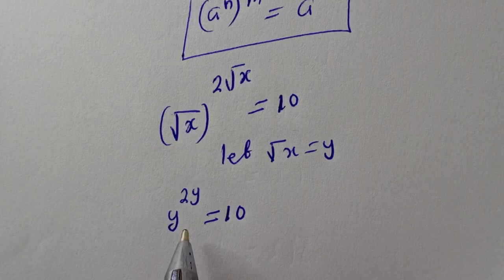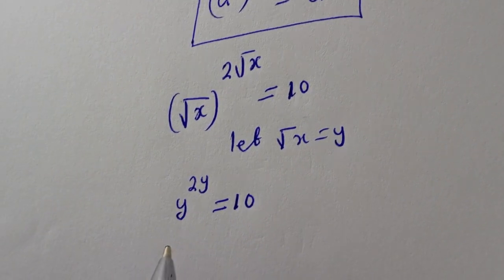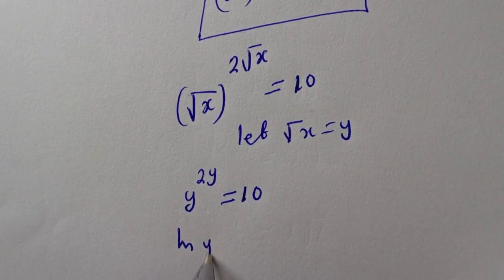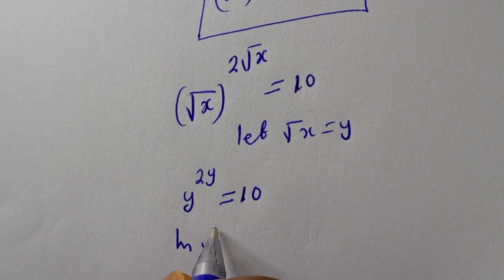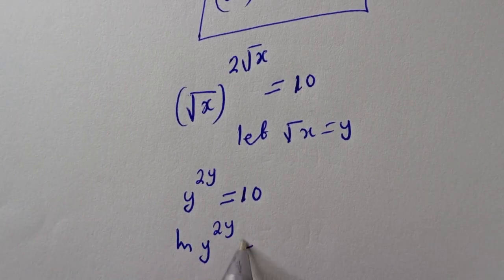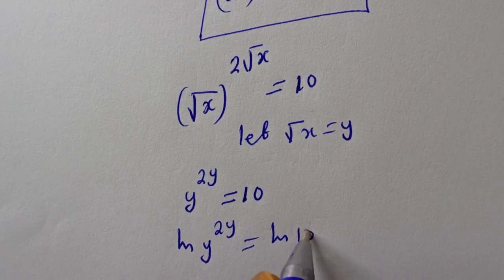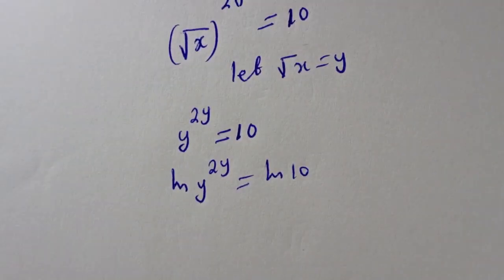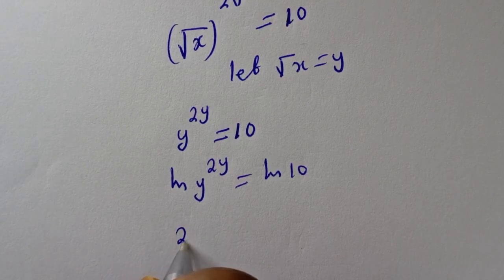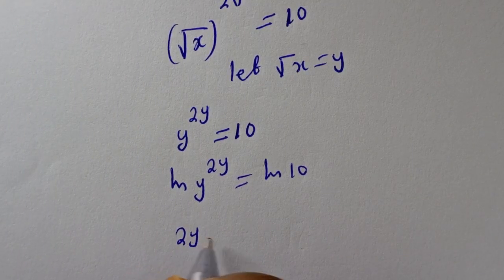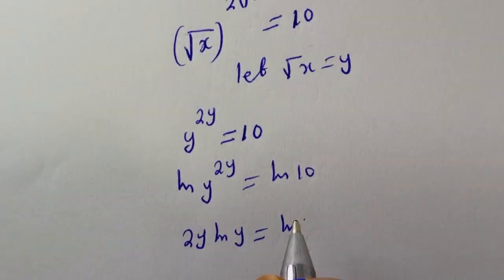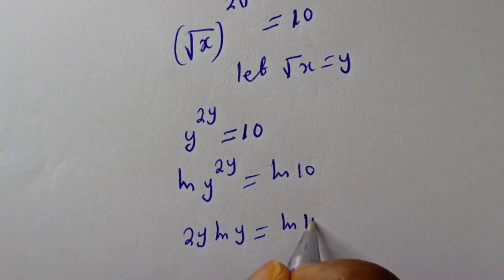Let's take the natural log of both sides. We have ln of y to the power of 2y is equal to ln of 10. Then this becomes 2y times ln of y is equal to ln of 10.